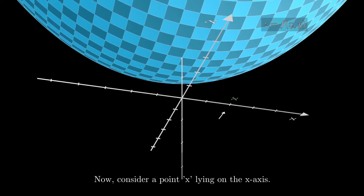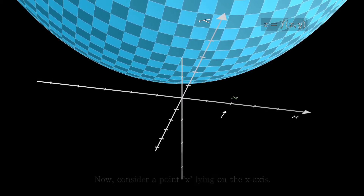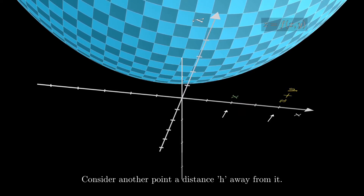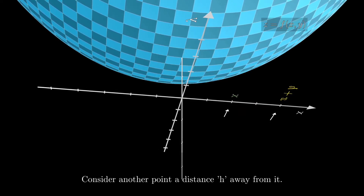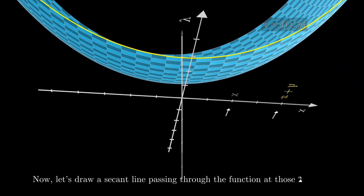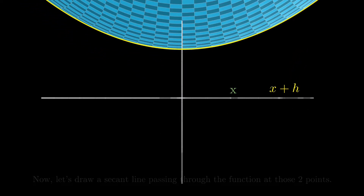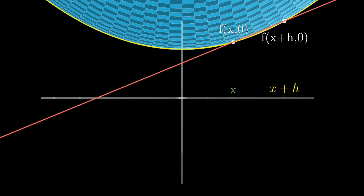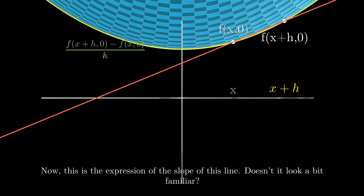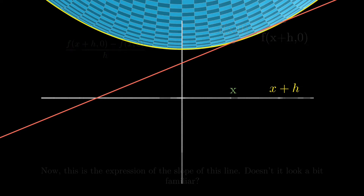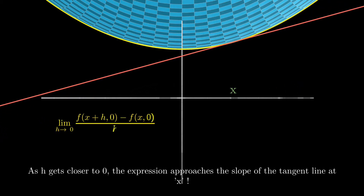Consider a point x lying on the x-axis and another point a distance h away from it. Now let's construct a secant line passing through the function at those two points. This is the equation for the slope of this line — as h goes closer and closer to zero, the expression approaches the slope of the tangent line at x.